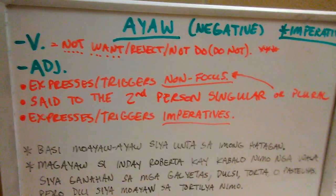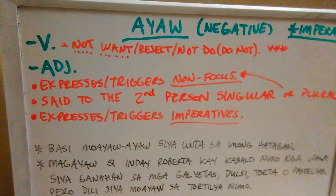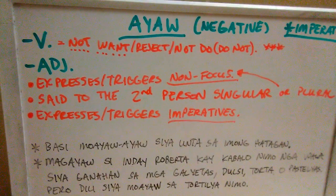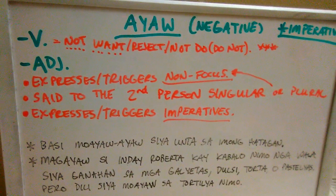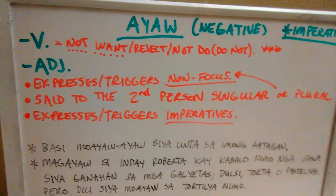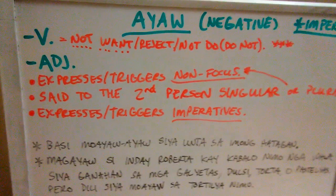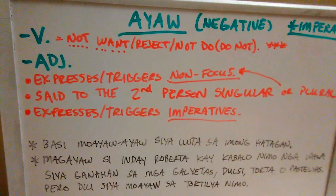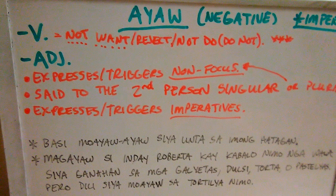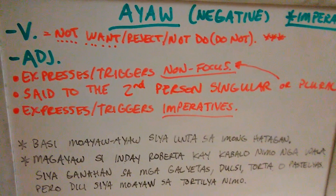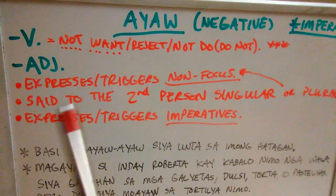As we've talked about, adjectives act like verbs — verbs of state, verbs of motion, verbs of change of state, verbs of emotion, and so on. In English we know them as 'to be' something: to be red, to be sad, to be happy, to be green, to be heavy, to be light — those are like adjectives. Now, how do we know what ayaw is going to be used with? Well, it expresses and triggers non-focus.